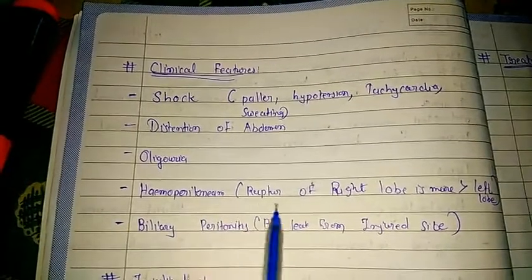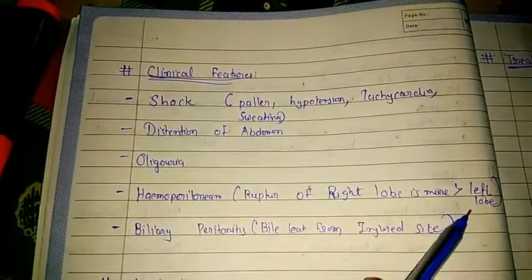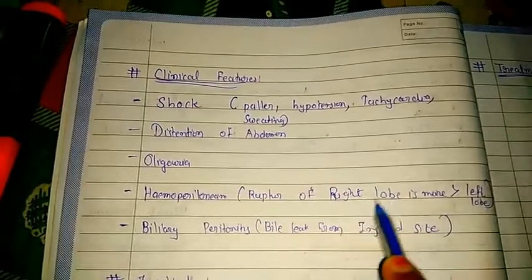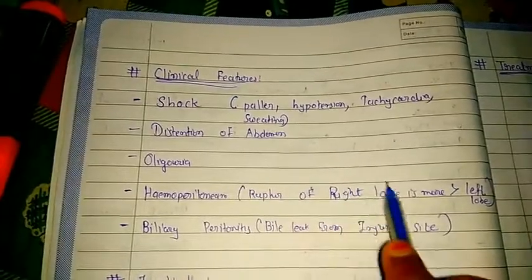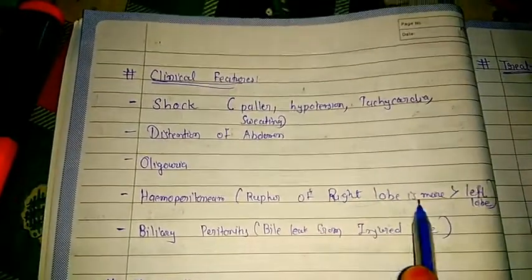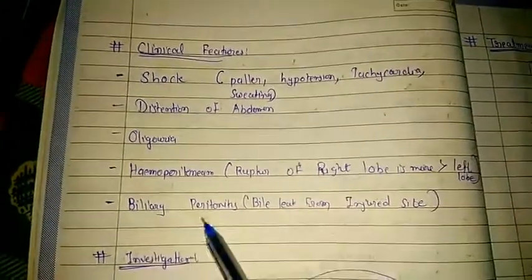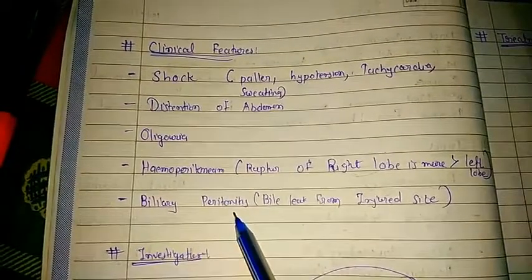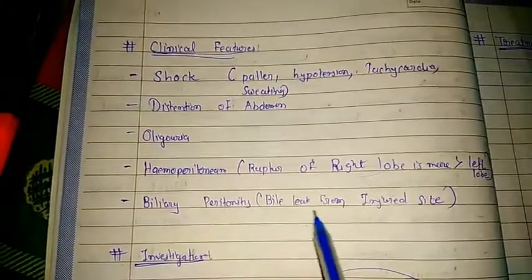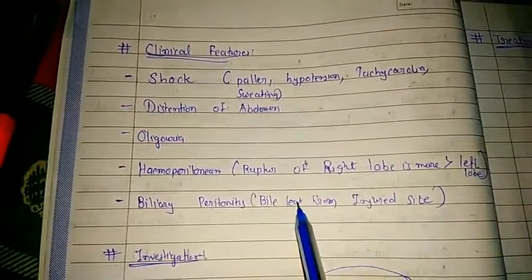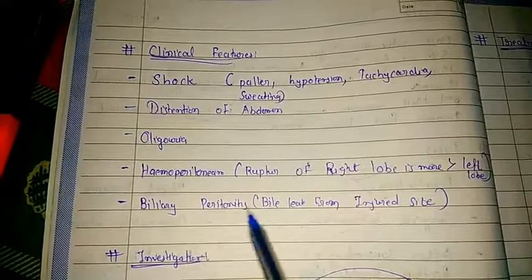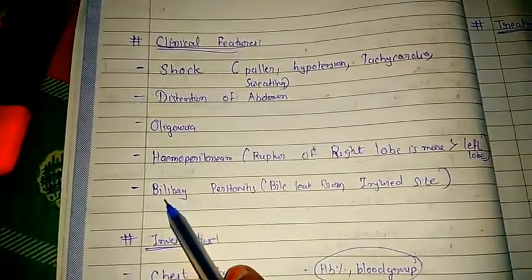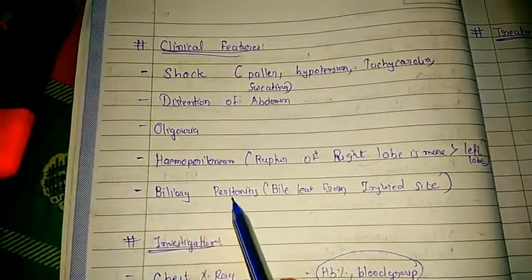Hemoperitoneum is a complication. Rupture of the right lobe is more common than the left lobe because of the streamline effect. Biliary peritoneum is also a complication: if bile leaks from the injury site, it collects in the peritoneum causing biliary peritonitis.